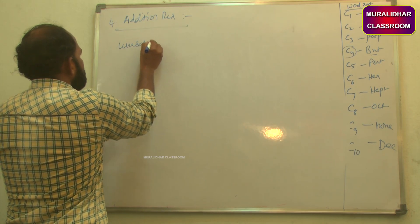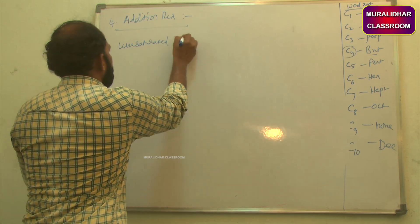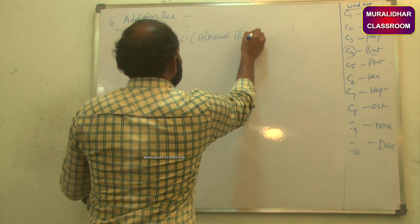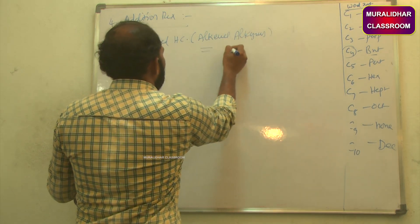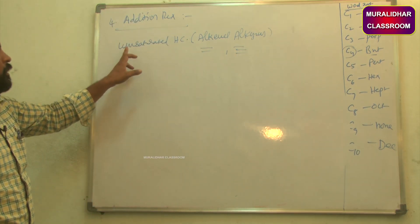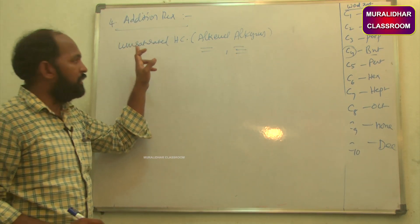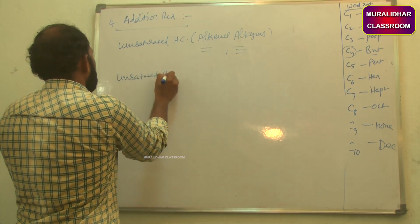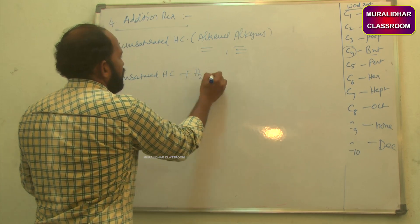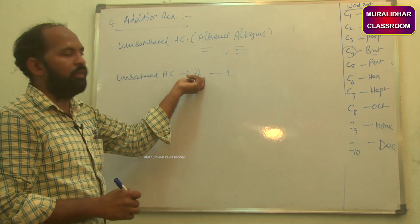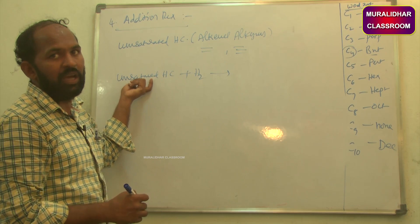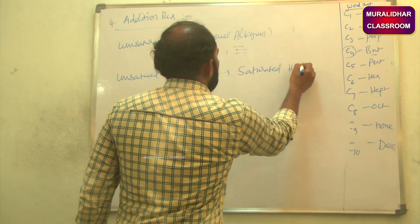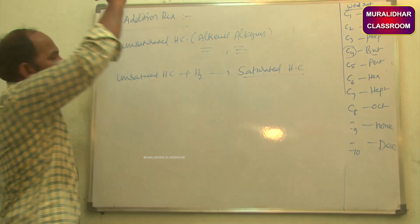The fourth type is addition reaction. Addition reactions involve unsaturated hydrocarbons — that means alkenes and alkynes, which are double-bonded and triple-bonded hydrocarbons respectively. One hydrogen molecule is added to these unsaturated hydrocarbons to give saturated hydrocarbons. This process is known as an addition reaction.